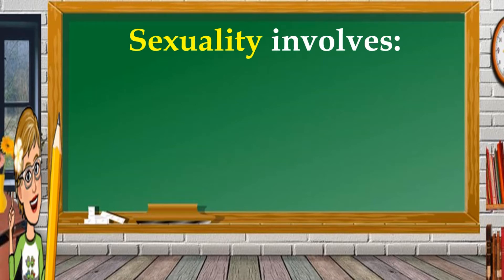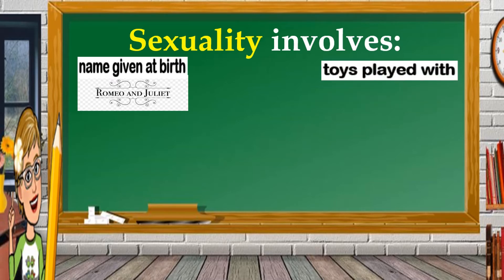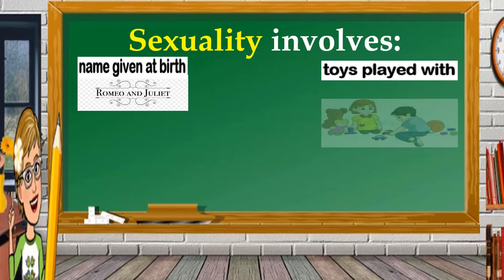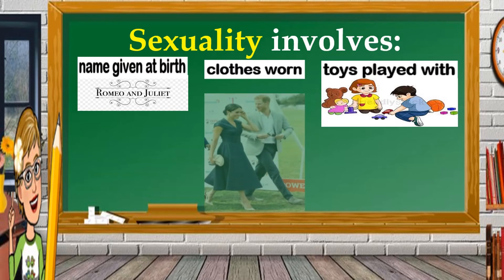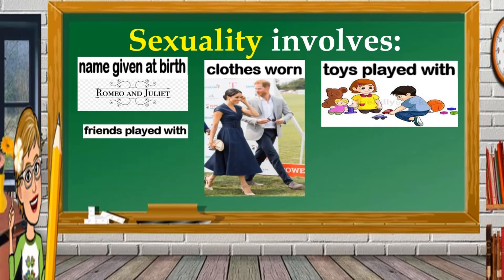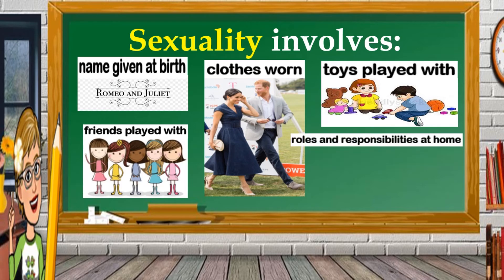Sexuality involves names given at birth like Romeo and Juliet, toys being played with, clothes, friends played with, and the roles and responsibilities at home.